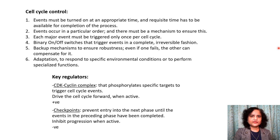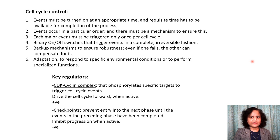The key regulators of cell cycle progression are the CDK-cyclin complexes. These complexes phosphorylate specific targets to trigger cell cycle events. They drive the cell cycle forward when active, so their overall impact on cell cycle progression is positive. Checkpoint controls, on the other hand, prevent entry into the next phase until events in the preceding phase have been completed. Checkpoint pathways inhibit progression when active — their overall impact is negative or inhibitory — but they are important to maintain fidelity of cell cycle progression.